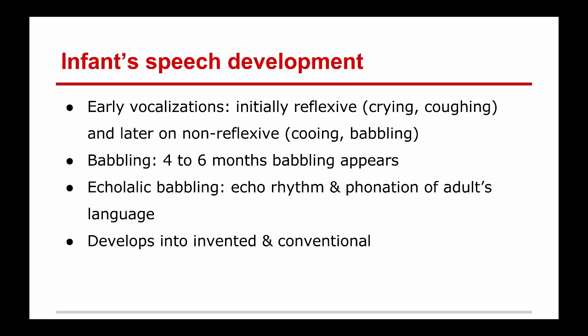Earlier on, infants are primarily reflexive — a lot of crying and coughing — that's how they express themselves. Later it becomes non-reflexive: cooing or babbling. Within four to six months we see babbling begin. This develops into echolalic babbling, where they echo the rhythms, phonation, and sounds of the adult's language. Then they start to develop communication patterns into something invented and conventional, developing their own strategies to communicate and conduct speech with people in the house.